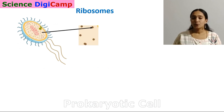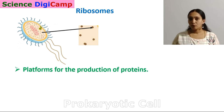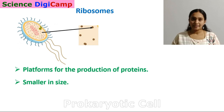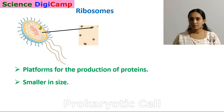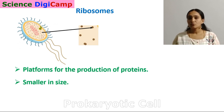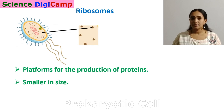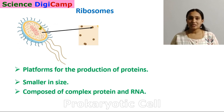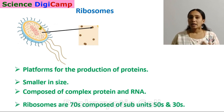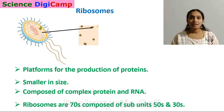Moving on to ribosomes — the platforms for the synthesis and production of proteins. In prokaryotic cells, ribosomes are smaller in size and free in form. They are composed of complex proteins and RNA, and are 70S type with subunits of 30S and 50S. In eukaryotic cells, ribosomes are 80S type. Here, S stands for Svedberg unit.